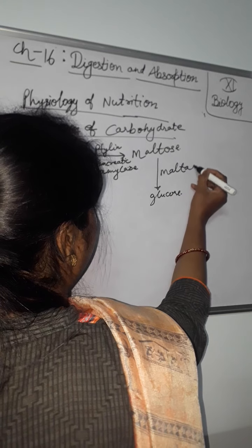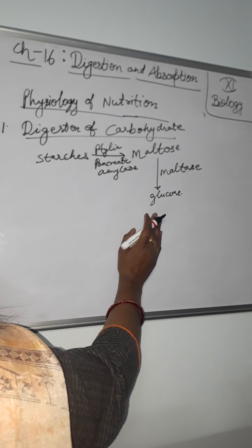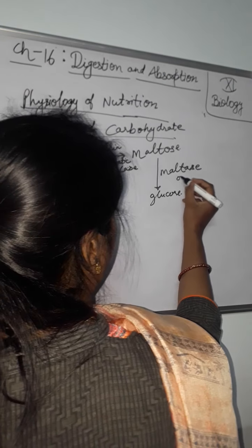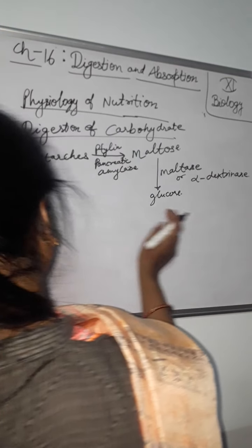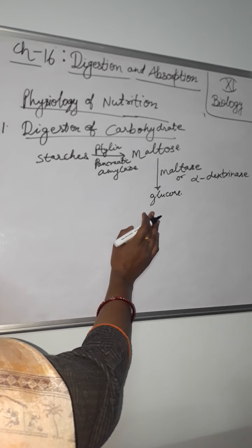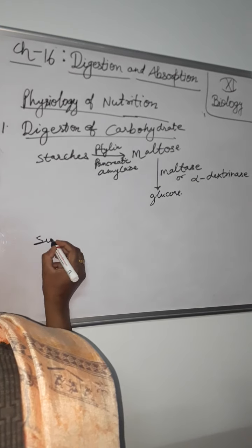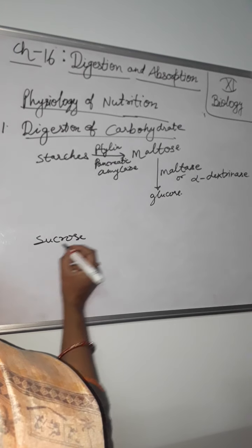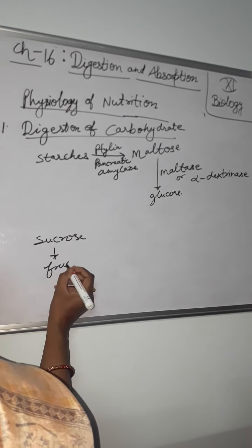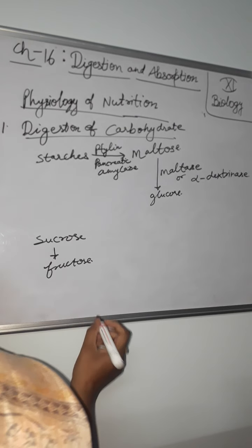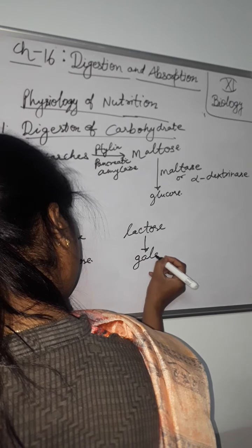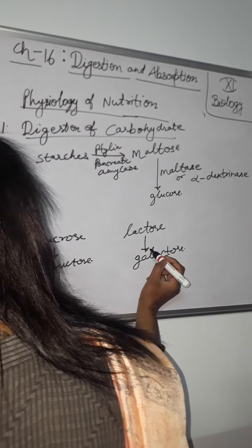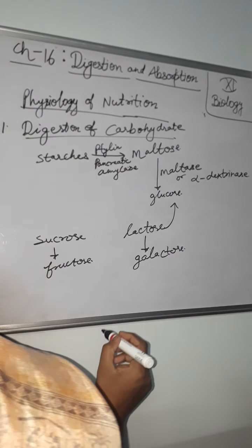With the help of maltase enzyme, also called alpha dextrinase. This is alpha dextrinase and glucose. Now sucrose also - sucrose converts into fructose and lactose converts into galactose and also lactose converts into glucose also. Now this is the conversion.